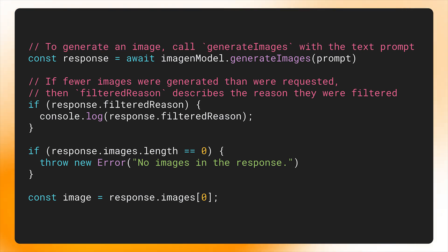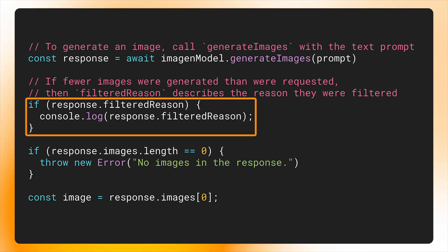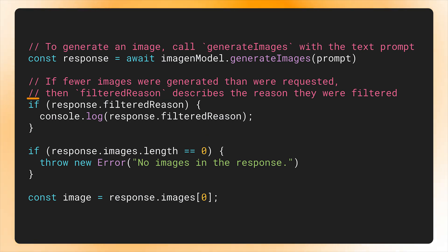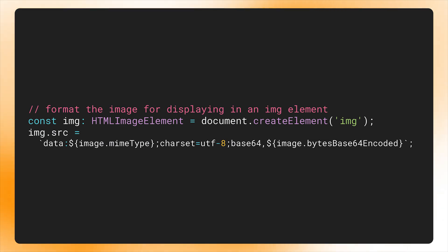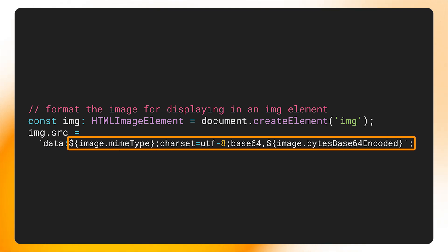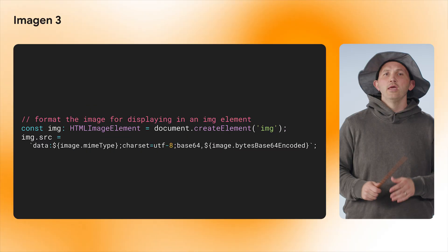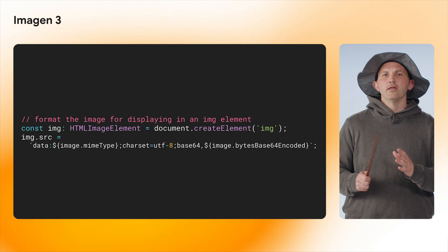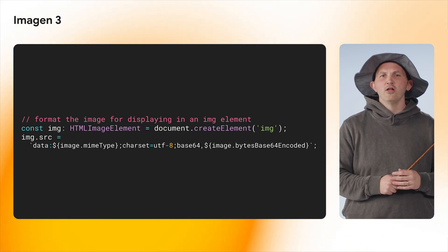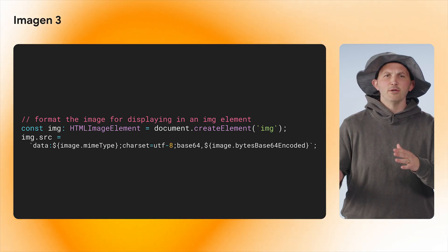Sometimes the model will refuse to generate an image — for example, due to the default safety settings or the settings that I've configured myself. If that happens, the filteredReasons attribute will return a detailed reason. To display the images, I can use the image response, which has a base64 and MIME type property. In this code snippet, I update the source of an HTML image element to then display the image.